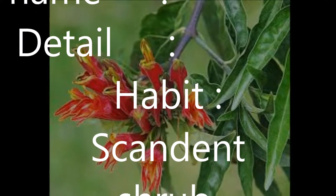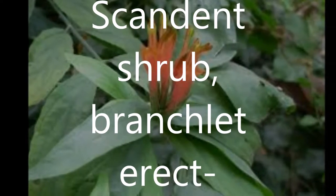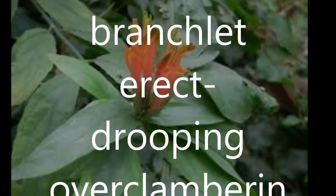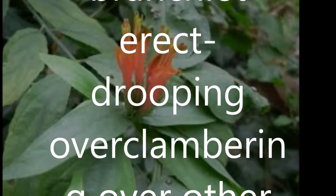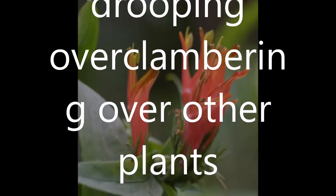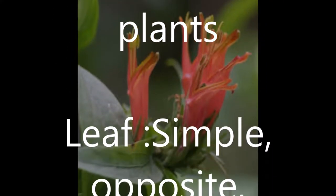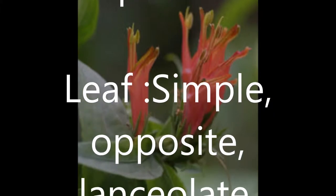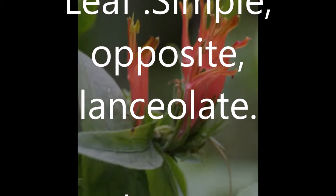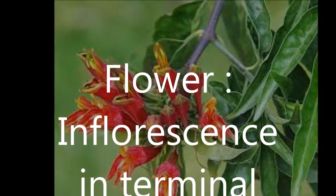Detail. Habit: scandant shrub; branchlets erect, drooping, or clambering over other plants. Leaf: simple, opposite, lanceolate. Flower: inflorescence in terminal dense cyme; flowers dull red with a green base. Fruit: capsule.